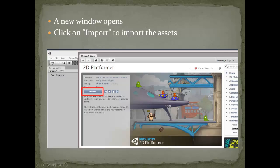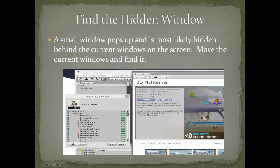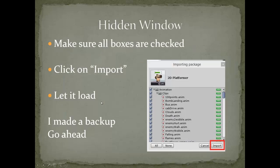If something didn't work, close everything up, don't save anything, open Unity back up, then open a web browser and follow through the slides — open a new window and click Import. If the import package window doesn't show up right away, just move it over to unhide the folder. Make sure all the boxes are checked, click Import, let it load, confirm the backup prompt, and then you're all set.